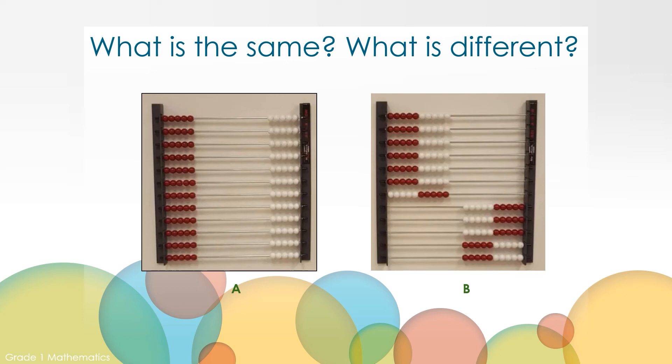I see that there are groups of five red beads in picture A, so I can count by fives. Five, ten, fifteen, twenty, twenty-five, thirty, thirty-five, forty, forty-five, fifty, fifty-five, sixty. The number represented in A is 60.